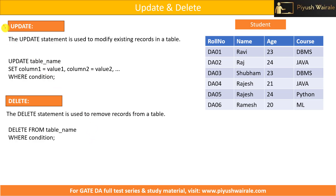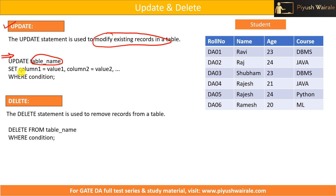First one is UPDATE. The UPDATE statement is used to modify existing records in a particular table. The syntax is: UPDATE table_name SET column1 = value1 WHERE condition. We have to change the table name, set the column value, and specify the condition.